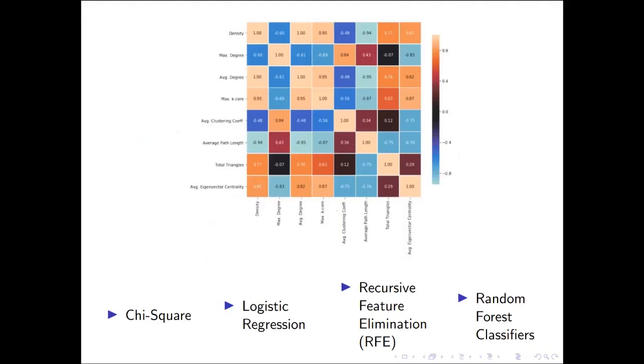To optimize the process, we perform a feature selection step. We use four different techniques, which are chi-square, logistic regression, recursive feature elimination, and random forest classifiers. With combinations of these methods, we obtain some reductions on the original feature vector.